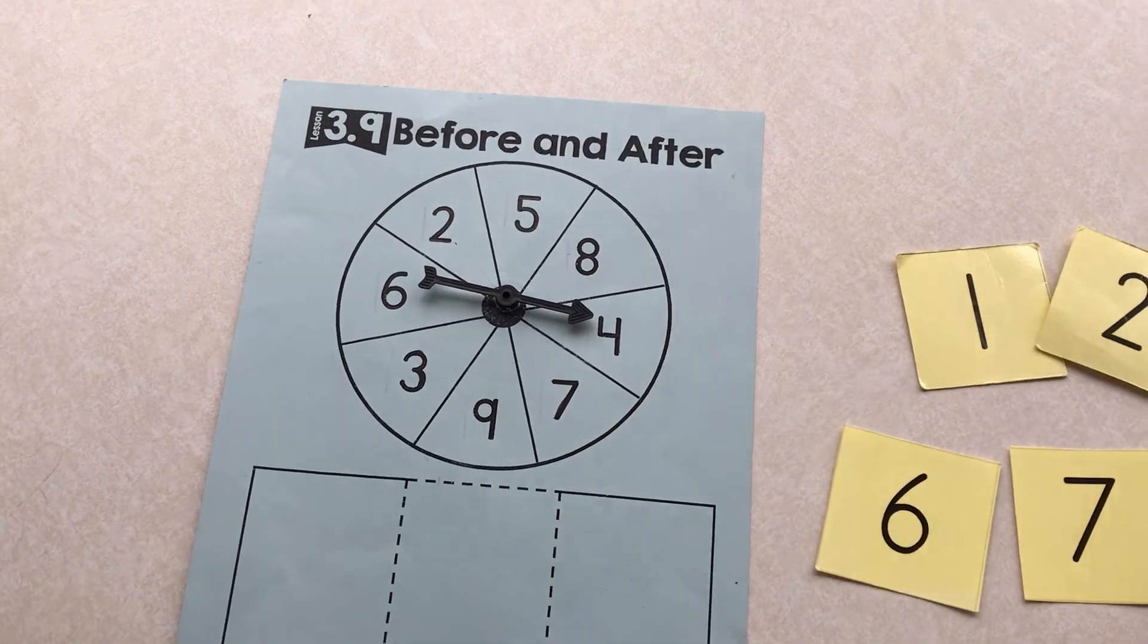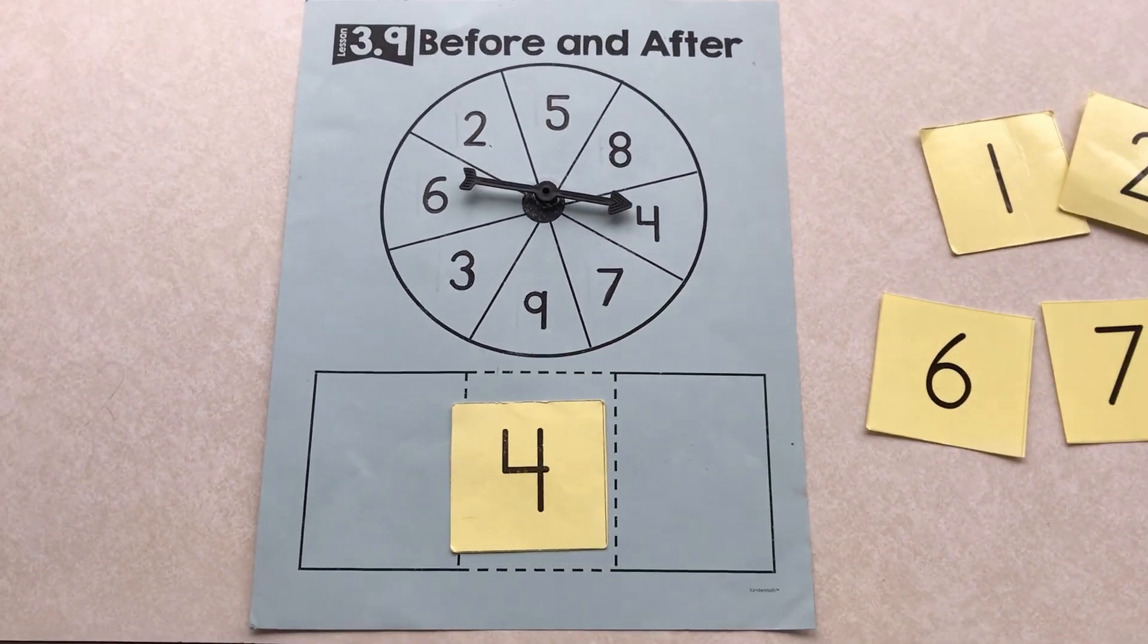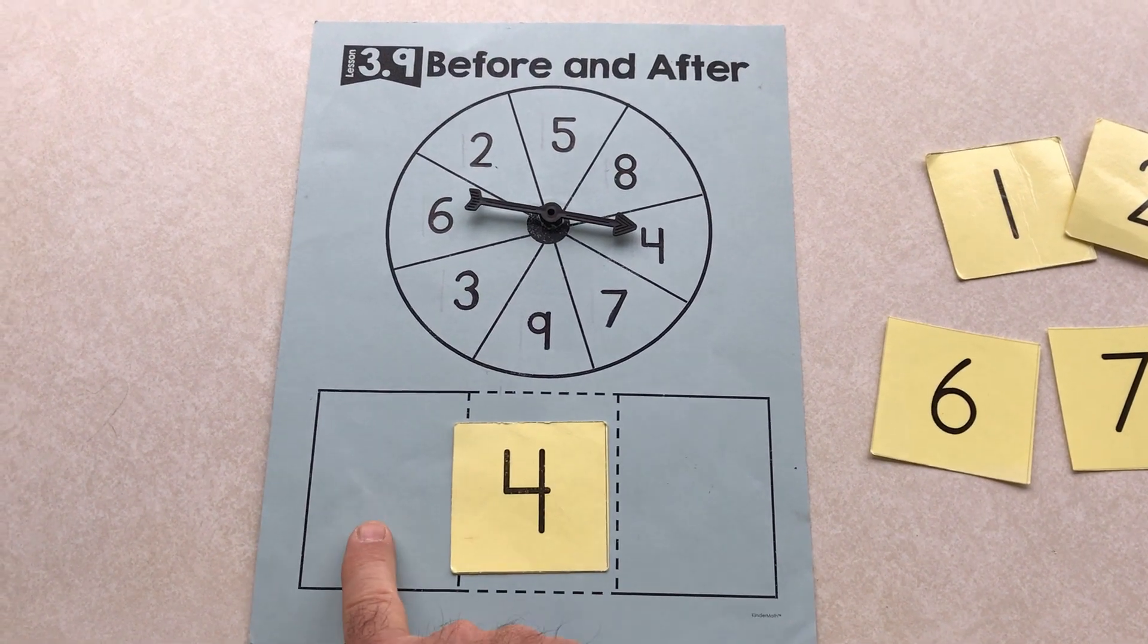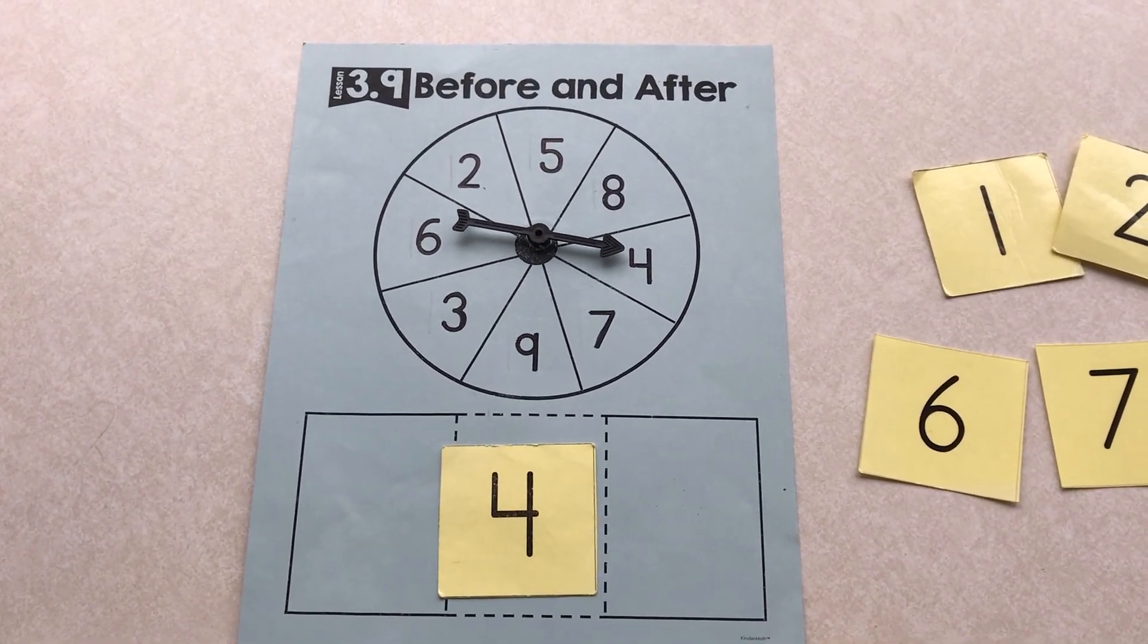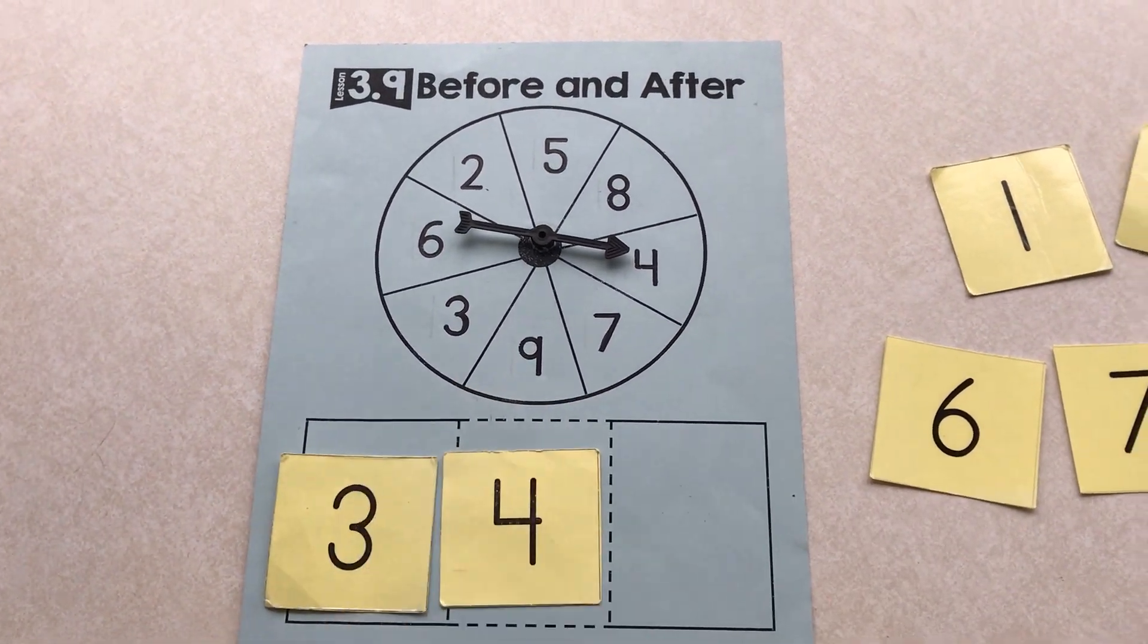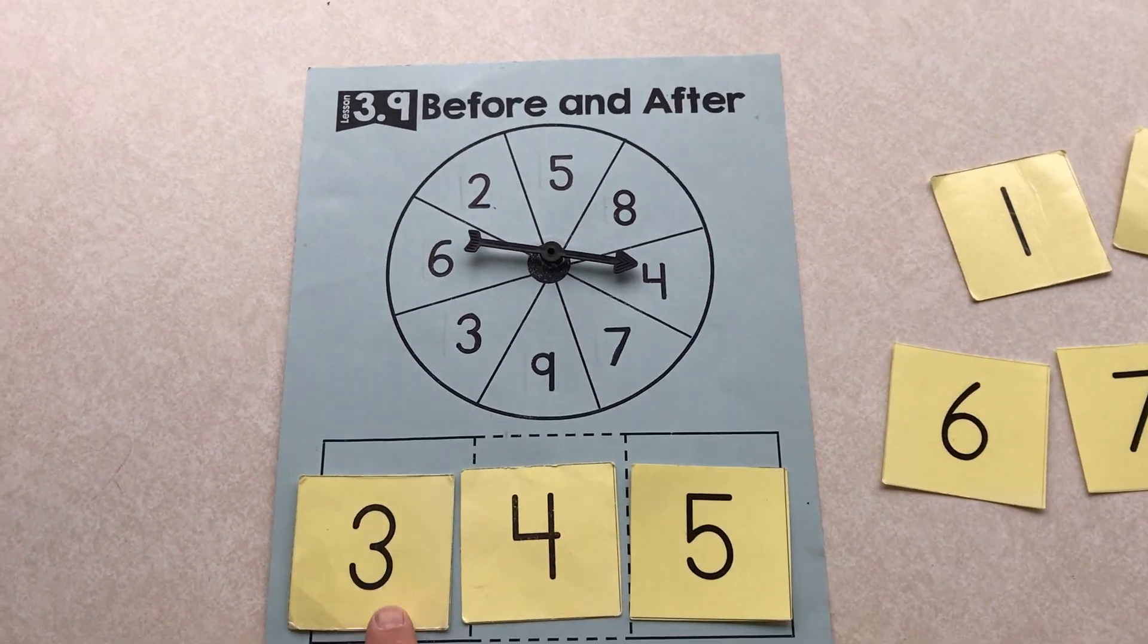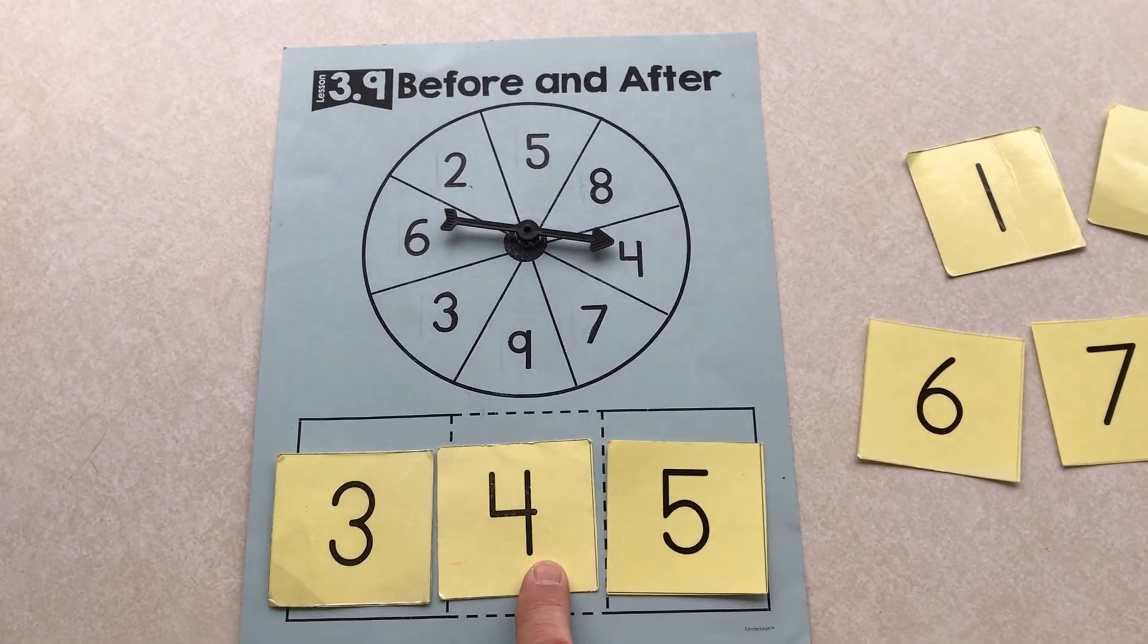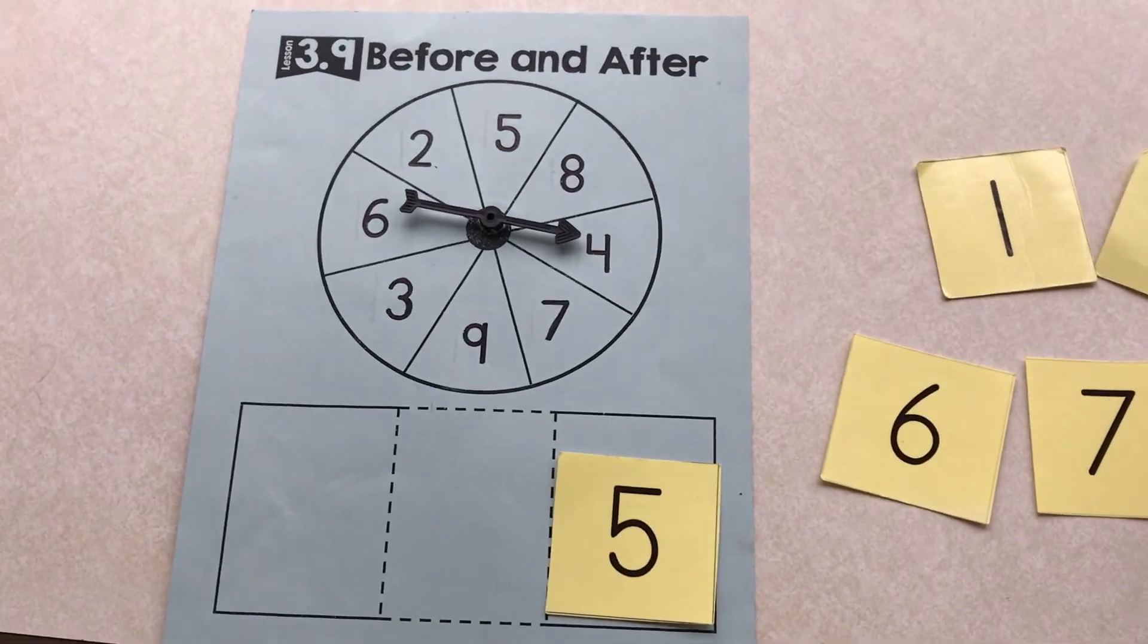This time it's four is my number. Four, five, six. Four goes in the middle. I want you to put the cards that come before and after. Three, four, five. Three, four, five.